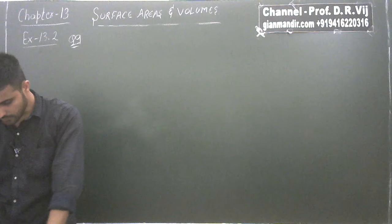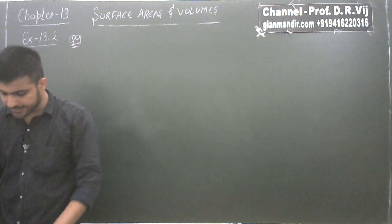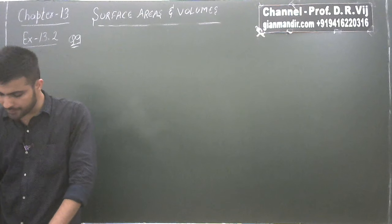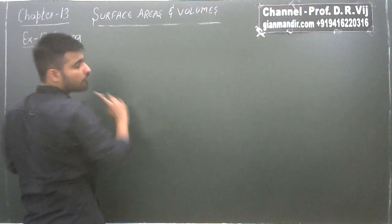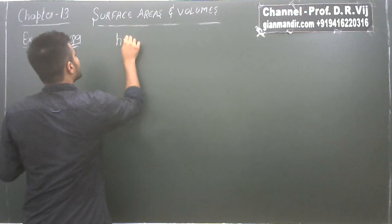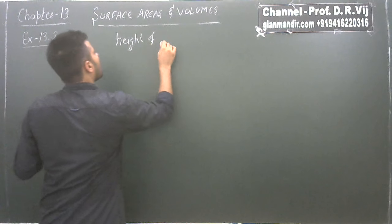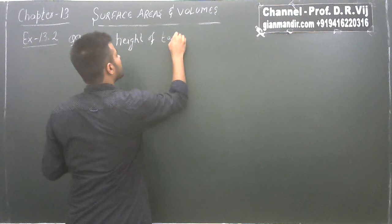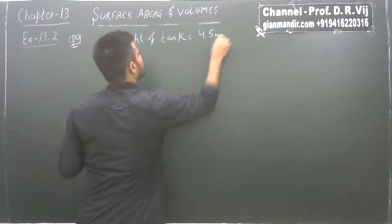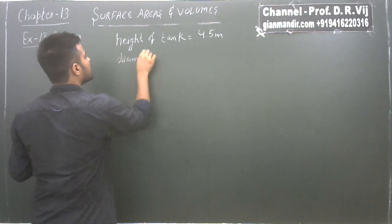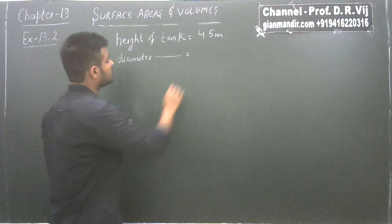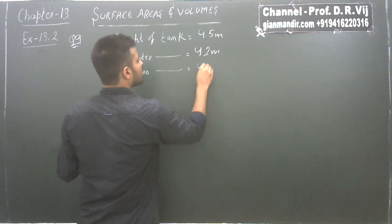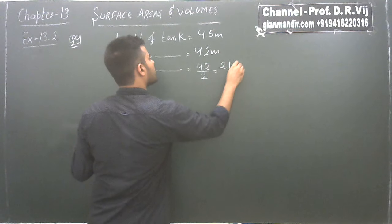Question number 9 says: find the lateral curved surface area of a closed cylindrical petrol storage tank that is 4.2 meter in diameter and 4.5 meter high. Height of tank is 4.5 meter and diameter of tank is 4.2 meter. So radius of tank will be 4.2 ÷ 2 = 2.1 meter.